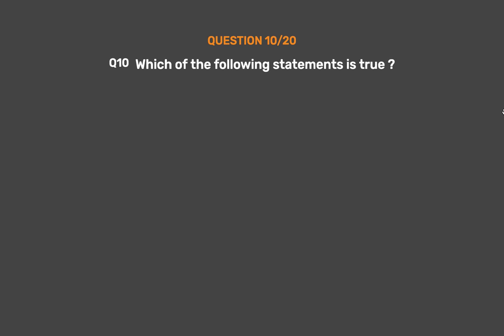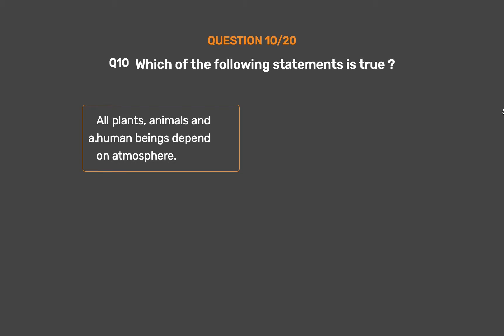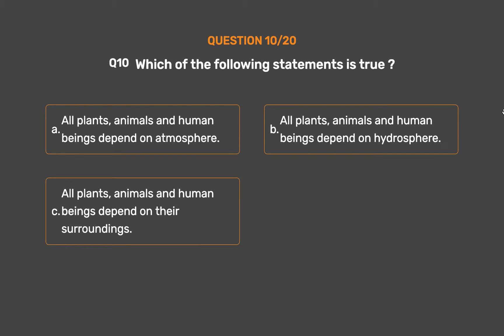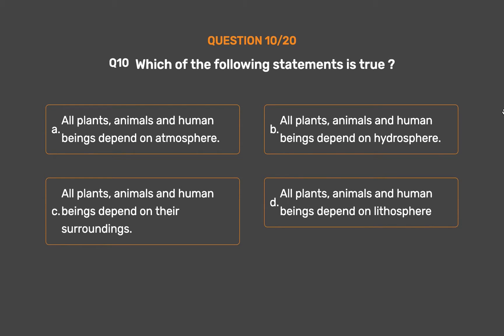Question No. 10. Which of the following statements is true? Option A: All plants, animals, and human beings depend on the atmosphere. Option B: All plants, animals, and human beings depend on the hydrosphere. Option C: All plants, animals, and human beings depend on their surroundings.